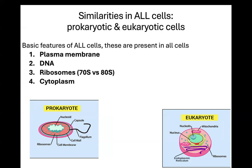In prokaryotes, they have something called a 70S ribosome. Eukaryotes have something called an 80S ribosome, and this will be important later. And then finally, the inside of a cell is called the cytoplasm — all cells have a cytoplasm. So these are the basic features of all cells.